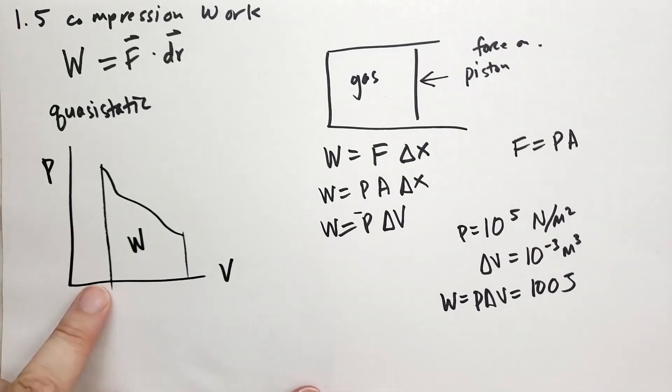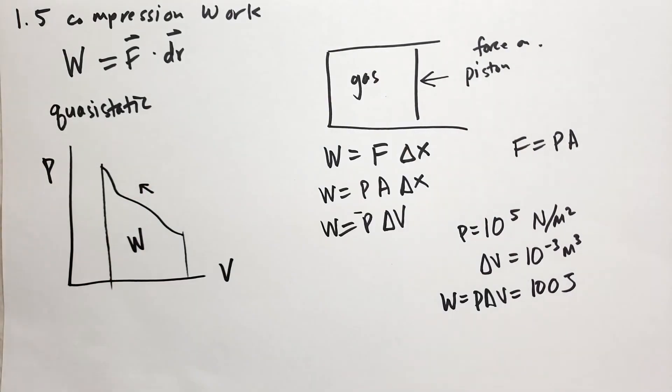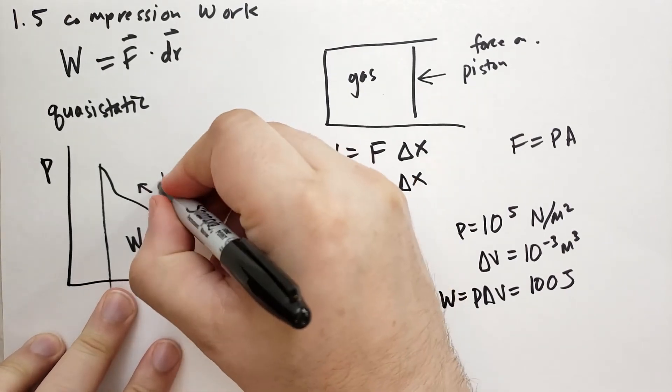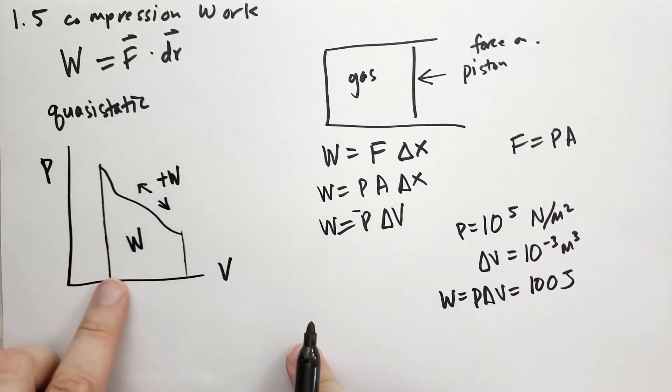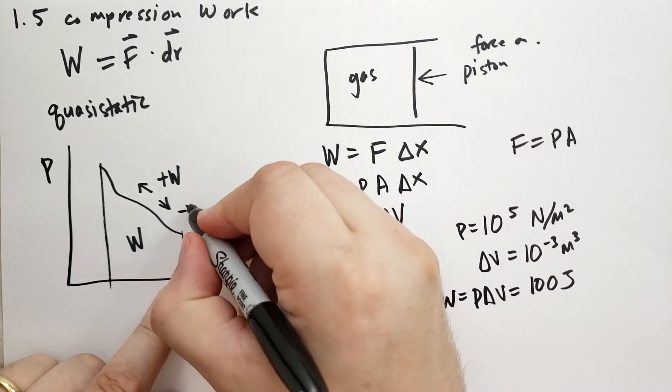So when there's a change in volume of the gas, there's the work done on the gas. And if you're moving this direction, if you're going uphill, if you're going from a large volume to a small volume, the change in volume is negative. So the work is increasing. If you're going the opposite direction, then the volume is going from a small value to a large value, which makes it positive. So the work is decreasing.